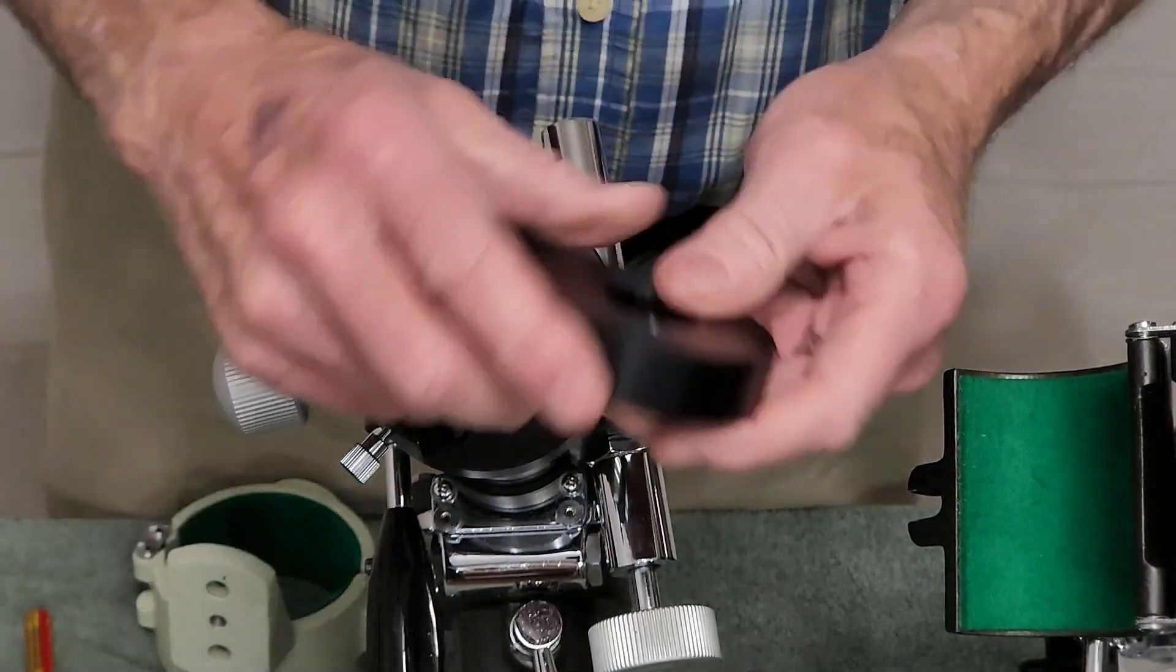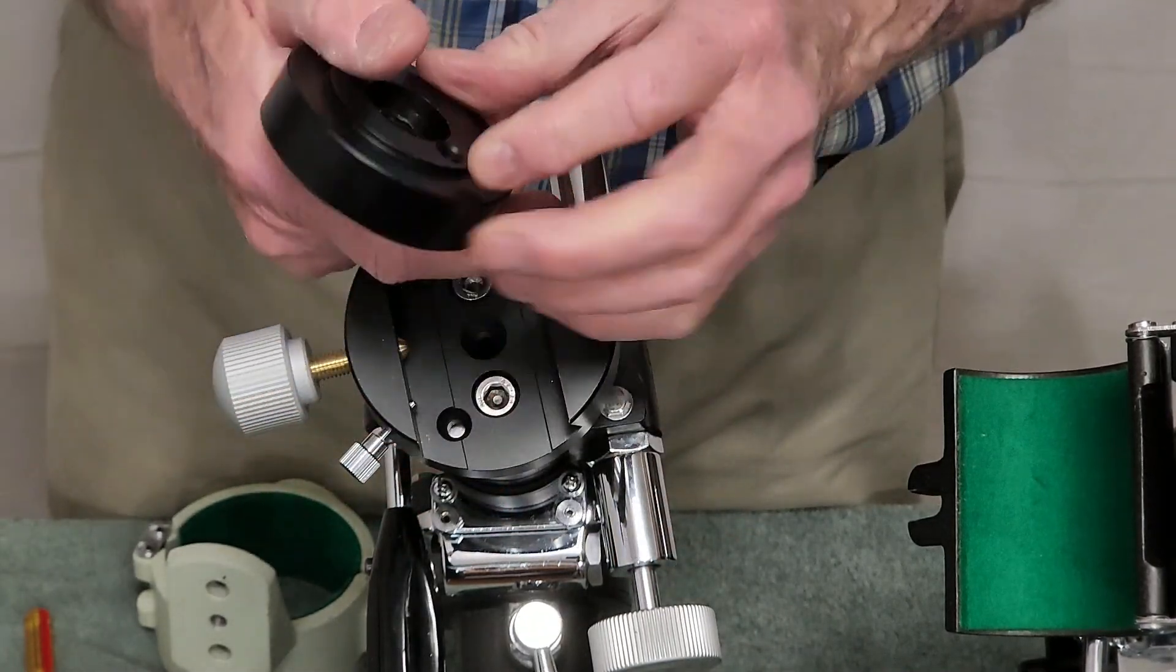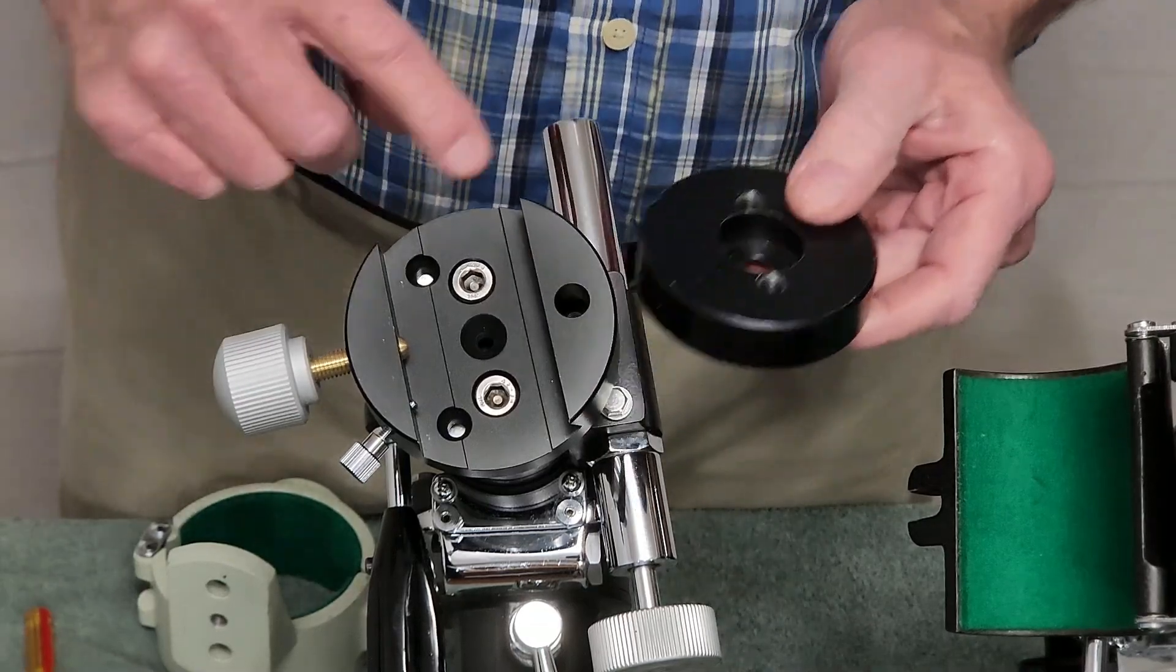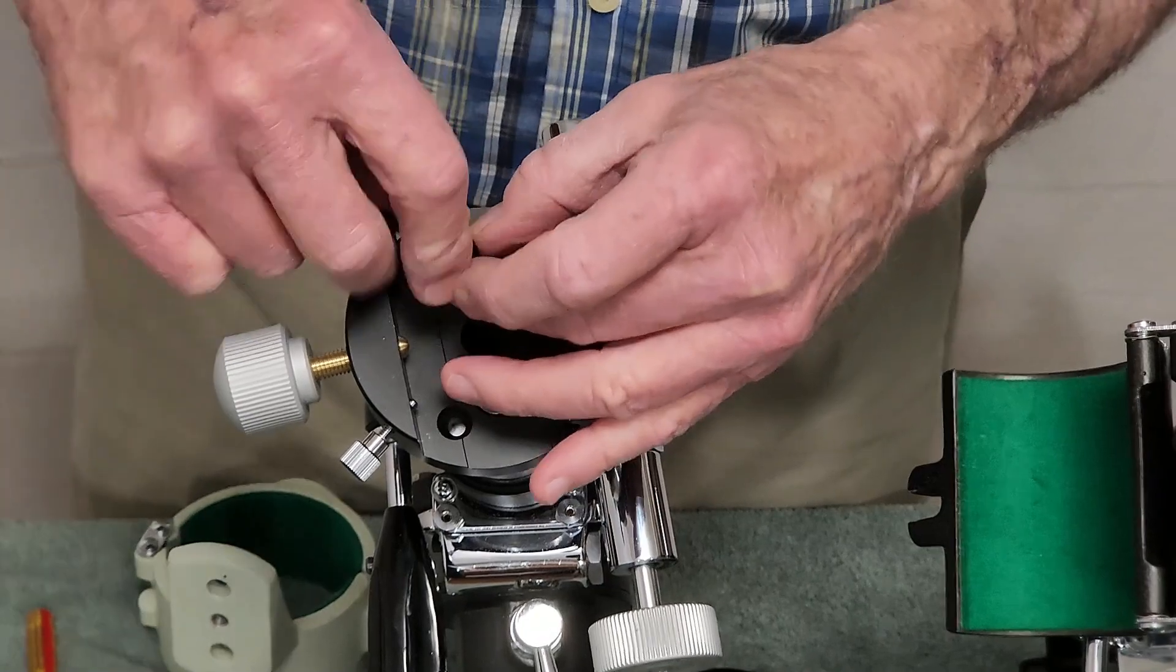Now, the problem is, where do you get one of those? Well, this is a commercial product. It came from Japan on another scope that I bought. This one here, this machined one, I made that. Not terribly complicated.